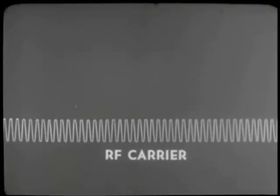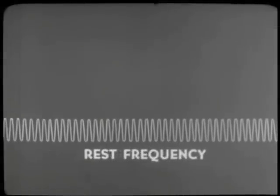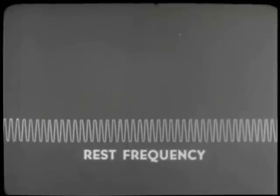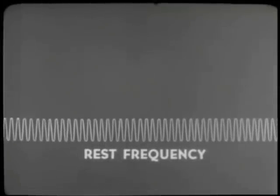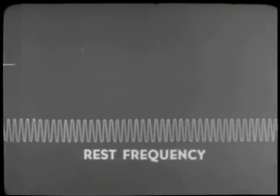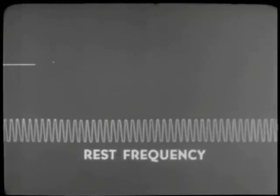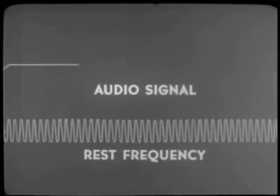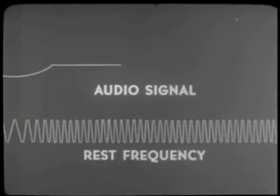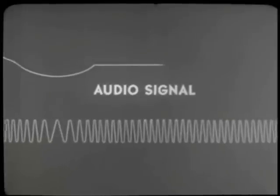The carrier frequency, which is determined by the oscillator, is called the rest frequency. So long as there is no audio signal, the carrier is unaffected. But see what happens when an audio signal is applied starting with the negative half cycle. For this illustration, the negative half cycle causes the carrier to drop below its rest frequency, as evidenced by the wider spaced waves.